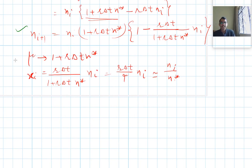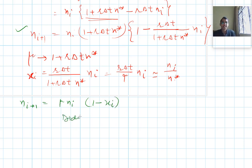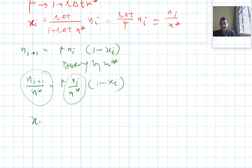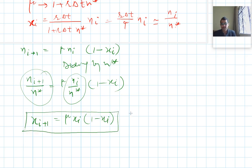I can write the above equation as N_i+1 = μ·N_i·(1 - x_i). Dividing by N*, we get N_i+1/N* = μ·(N_i/N*)·(1 - x_i). Calling N_i/N* = x_i and N_i+1/N* = x_i+1, we can write x_i+1 = μ·x_i·(1 - x_i). This is the simplified logistic map equation for our problem.